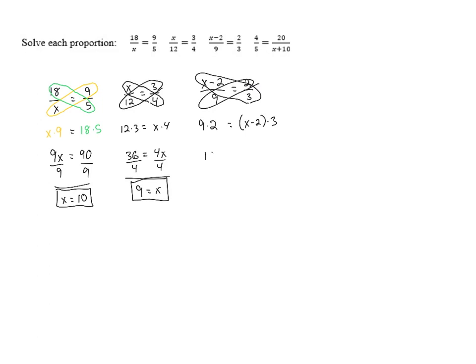Now 9 times 2 is 18. On the left, on the right, we're going to have to distribute that 3, giving us 3x minus 6.